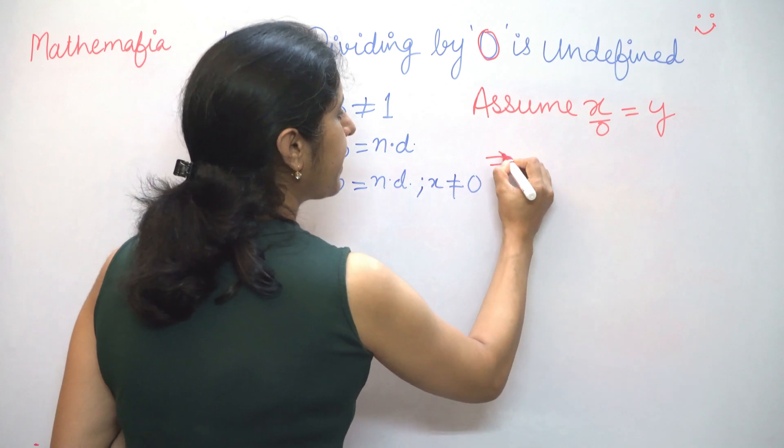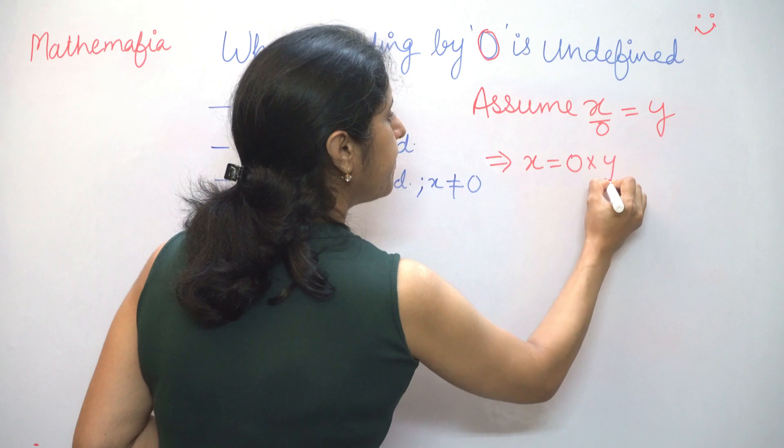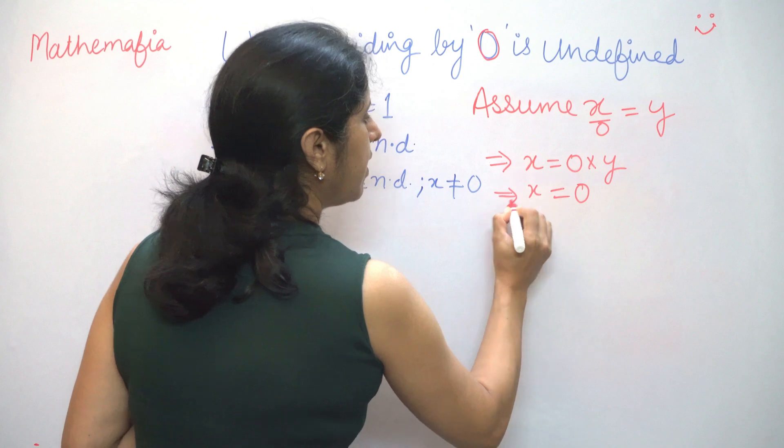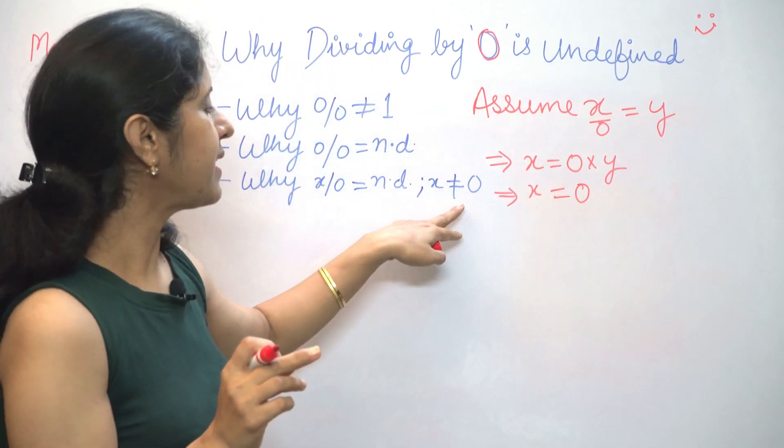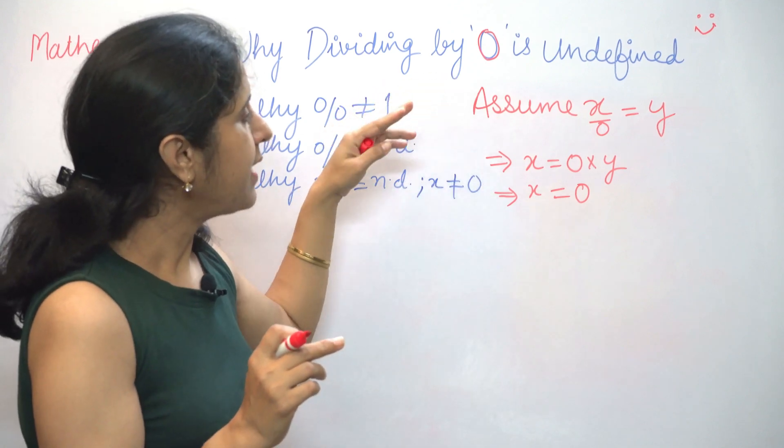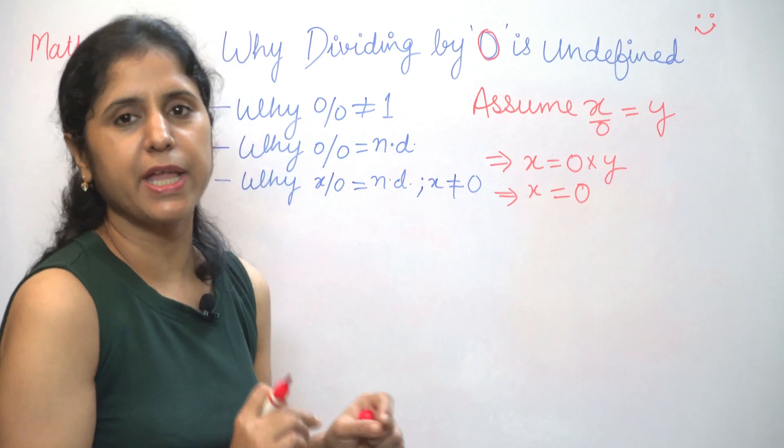So this would imply that x is equal to 0 into y which is equal to 0. Now, we have reached a contradiction again because we had assumed that x is not equal to 0. So our assumption is wrong and x upon 0 is going to be undefined for any value of x.